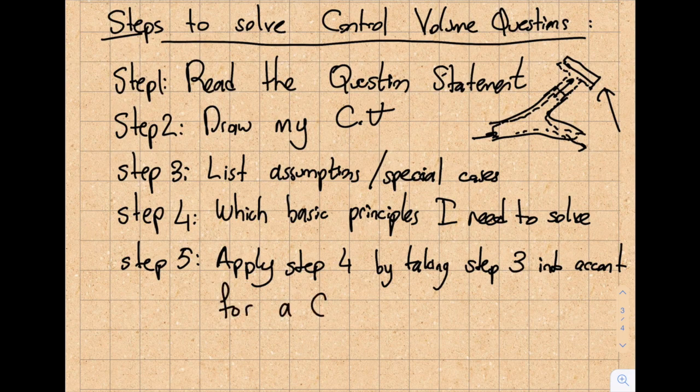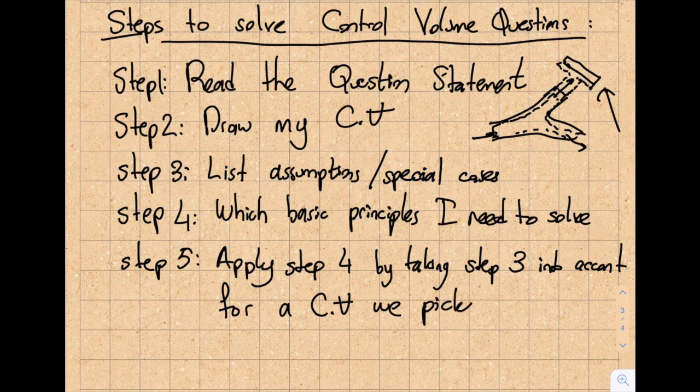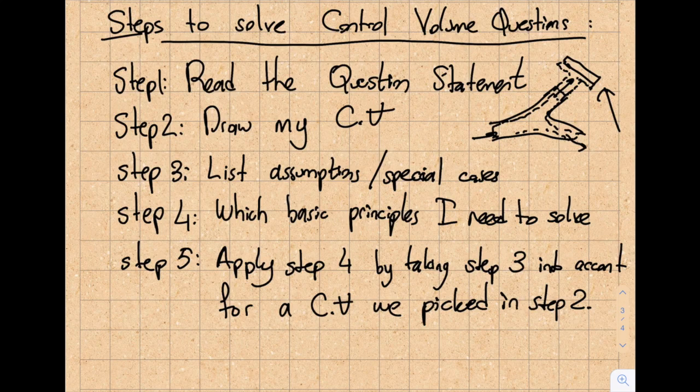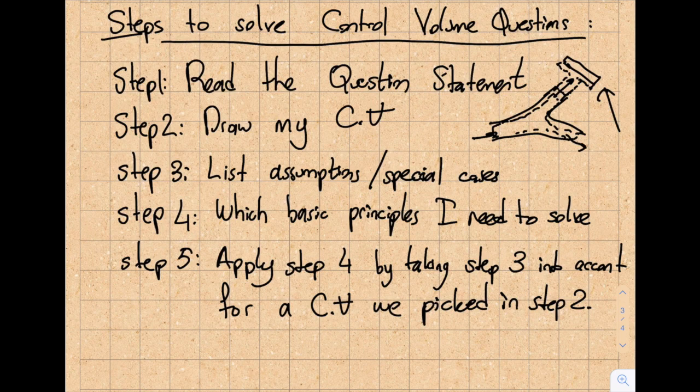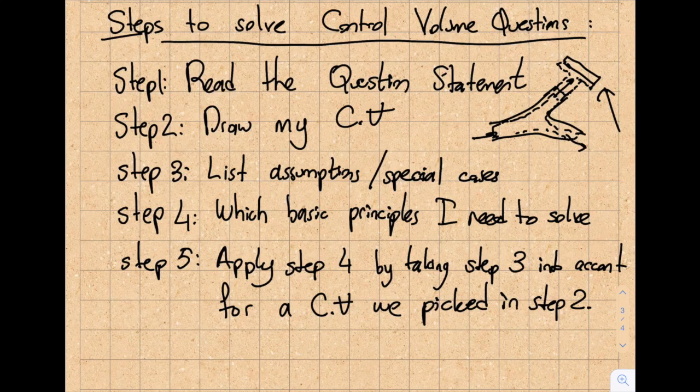And the step number five is basically apply step number four by taking step number three into account for a control volume we picked in step two. So you can see step five is the most comprehensive step, but it's not really a step. What actually is that? You're just simply going and solving the questions, and you're being very careful in the assumptions of special cases, and you're only applying this to a particular control volume that you have selected.